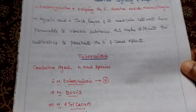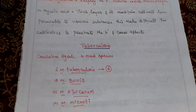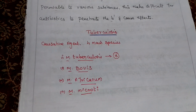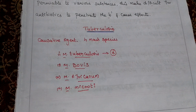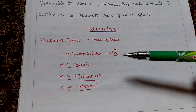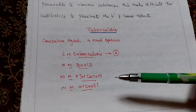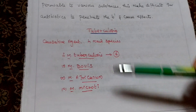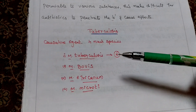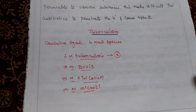The causative agents of tuberculosis include four main species: Mycobacterium tuberculosis, Mycobacterium bovis, Mycobacterium africanum, and Mycobacterium microti. Comparing to the others, Mycobacterium tuberculosis causes the most severe infection in human beings.